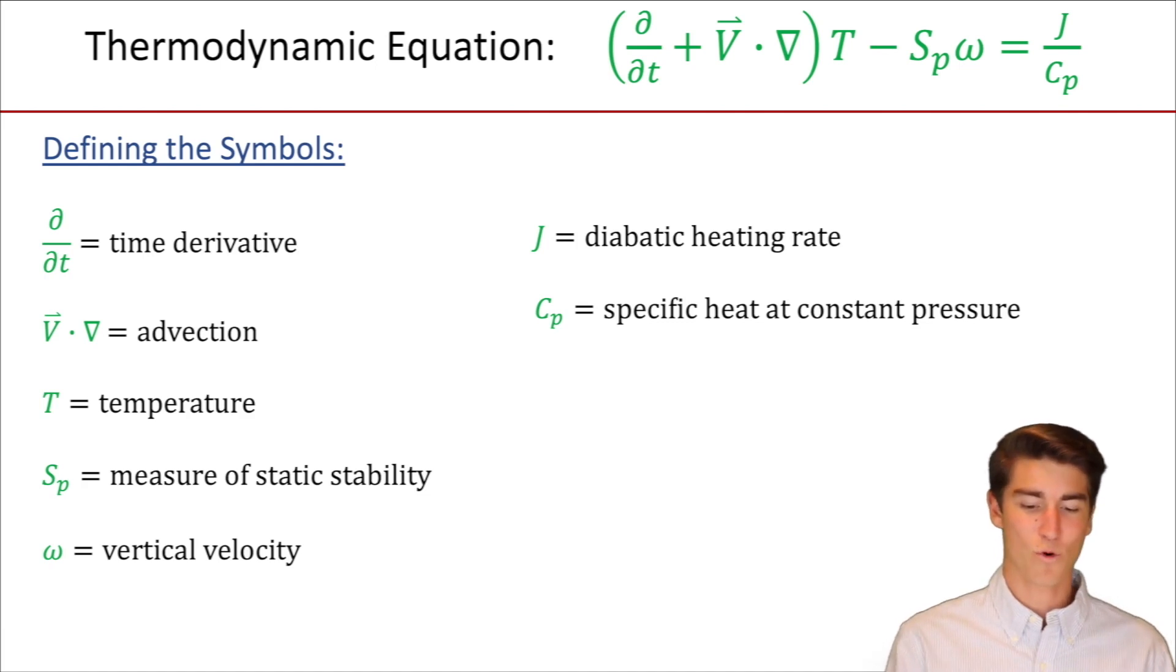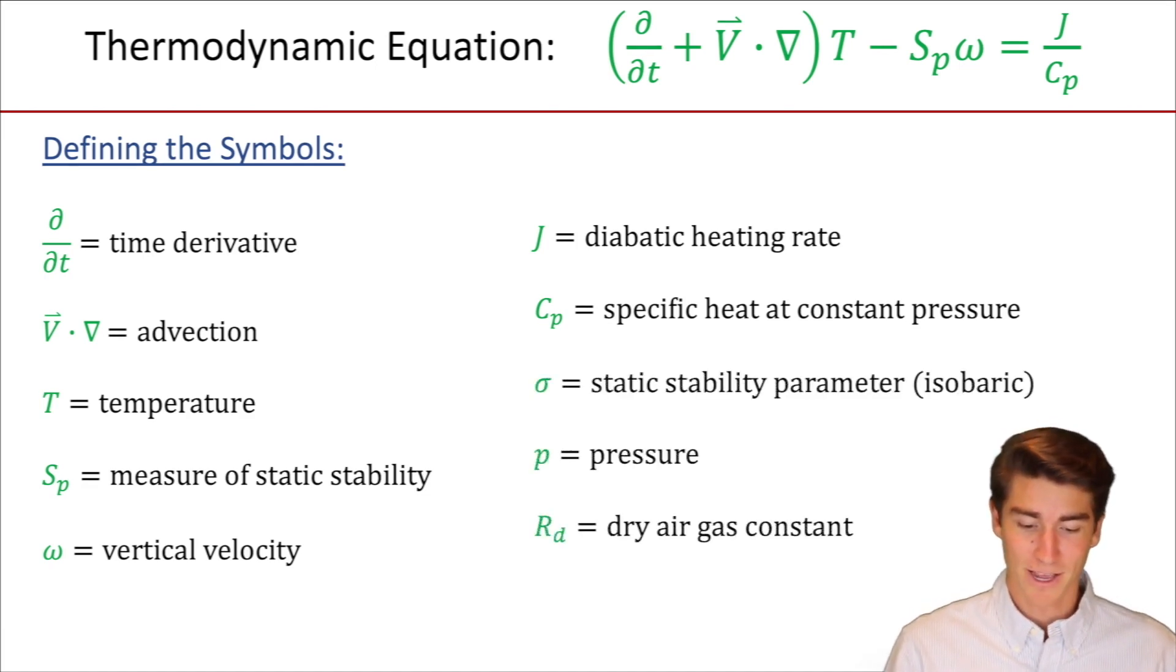cp is the specific heat at constant pressure. And if you want more description of some of these, you can find them with a simple google search or in any meteorology textbook. Sigma is the static stability parameter. p equals pressure, probably know that one. And Rd is the dry air gas constant.